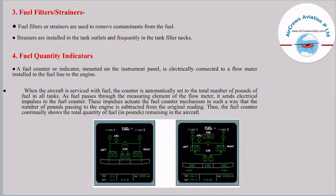As fuel passes through the measuring element of the flow meter, it sends electrical impulses to the fuel counter. These impulses actuate the fuel counter mechanism so that the number of pounds passing through the engine is subtracted from the original reading. Thus, the fuel counter continually shows the total quantity of fuel in pounds remaining in the aircraft.